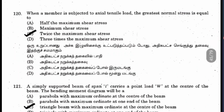Question 120: when a member is subjected to axial tensile load, the greatest normal stress is equal to what? This is studied in complex stress and strain using Mohr's circle, where τ_max = σ / 2. Rearranging, σ = 2 × τ_max. So the greatest normal stress is twice the maximum shear stress.